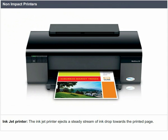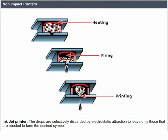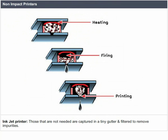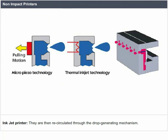Inkjet printer: The inkjet printer ejects a steady stream of ink drops towards the printed page. The drops are selectively discarded by electrostatic attraction to leave only those needed to form the desired symbol. Those that are not needed are captured in a tiny gutter, filtered to remove impurities, and then recirculated through the drop-generating mechanism.